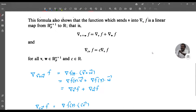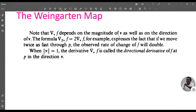Note that ∇_v f depends on the magnitude of v as well as on the direction of v. For example, ∇_(2v) f = 2 · ∇_v f. This expresses the fact that if we move twice as fast through p, the observed rate of change of f will be double. When ||v|| = 1, the derivative ∇_v f is called the directional derivative of f at p in the direction of v.